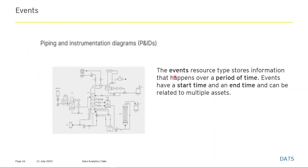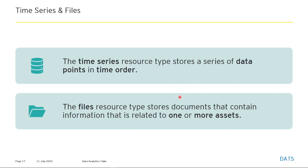The event resource type stores information about things that happen over a period of time. An event has a start time and end time and can be related to multiple assets — for example, piping and instrumentation diagrams (P&IDs). The time series resource type stores a series of data points in time order. The file resource type stores documents that contain information related to one or more assets.